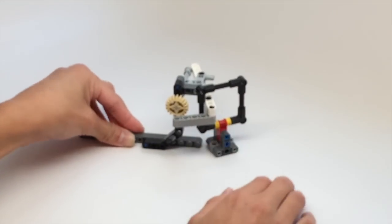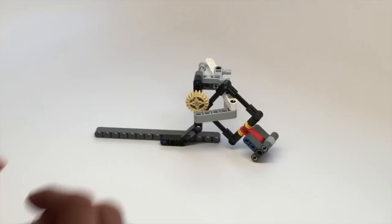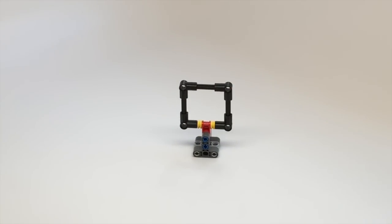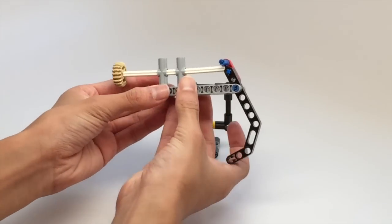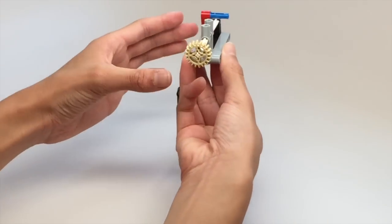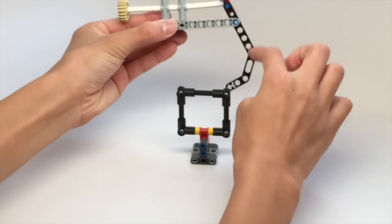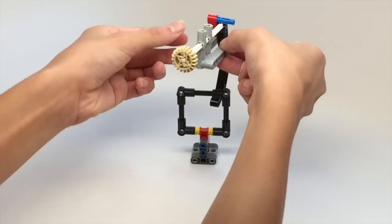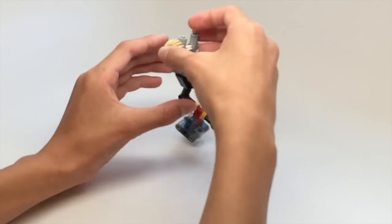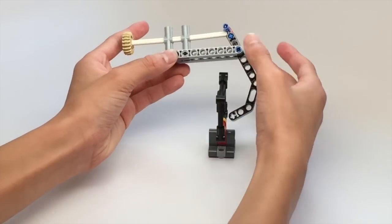One last example of passive trigger release is something like this attachment. Again, the yellow gear is where we're going to contact the wall or mission model. We're going to have this black hook here catching the ring. There we go, we can bring the loop around and it's caught inside here.